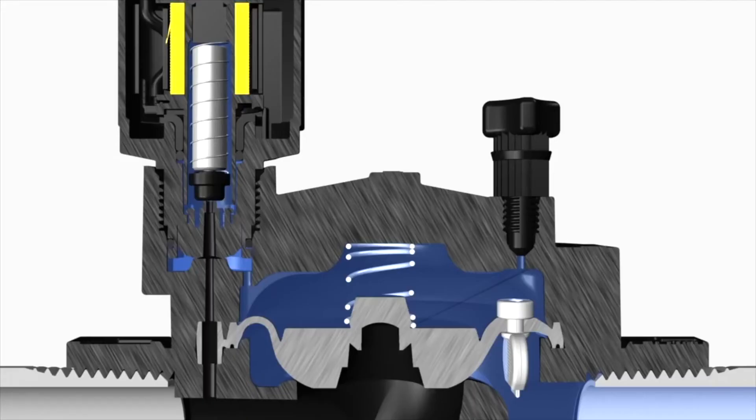When we activate a solenoid or turn a valve on manually, we are causing the plunger seal located underneath the solenoid to open.